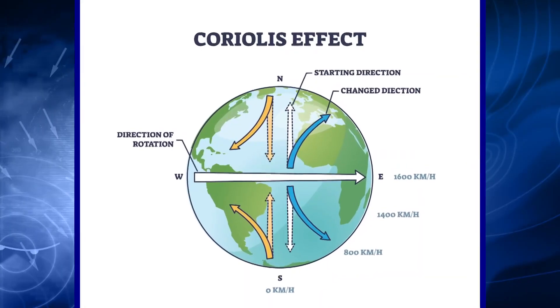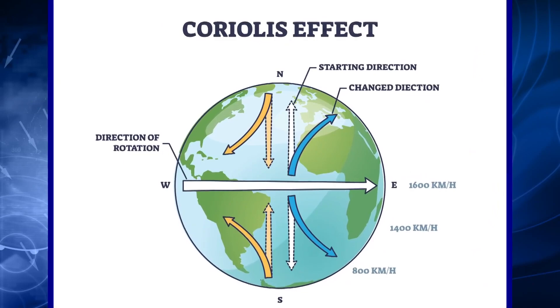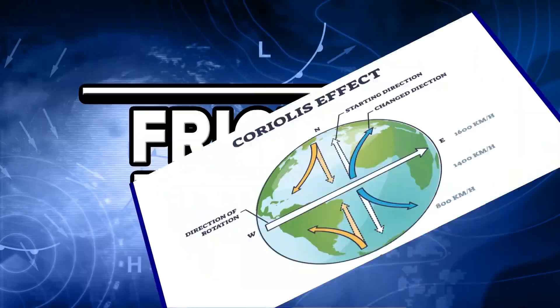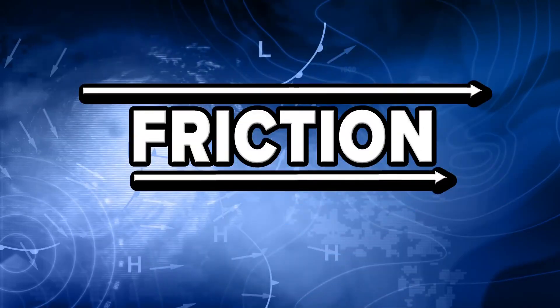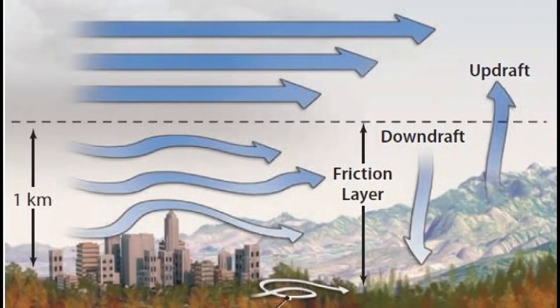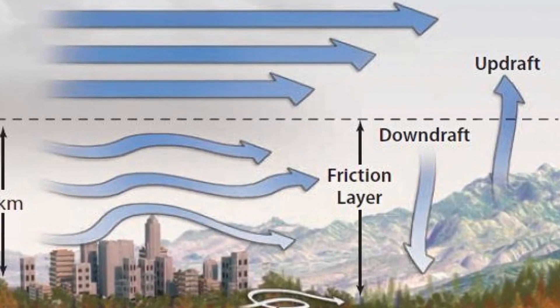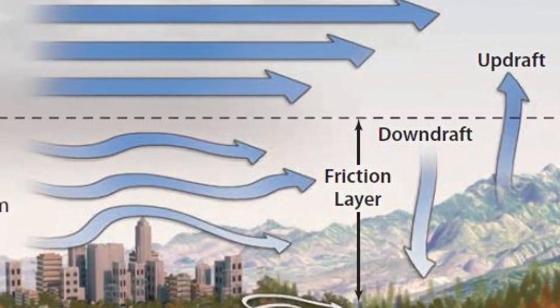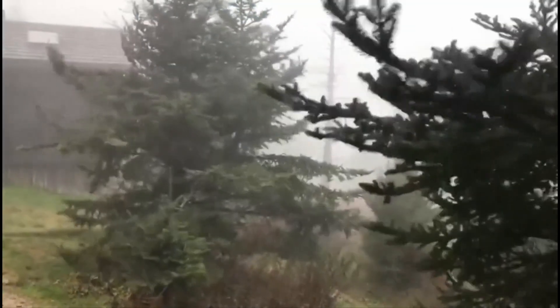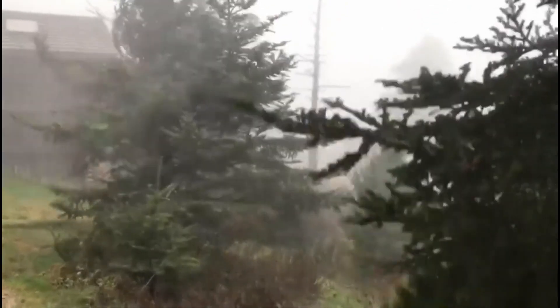Wind is also controlled by the Coriolis effect — the rotation of the earth — and friction. The rotation of the earth deflects the wind, and friction such as trees and buildings can slow it down. This is why winds are stronger higher up in the mountains, because there's less friction to slow things down.